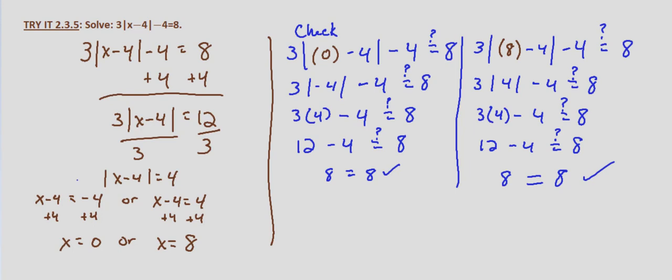So our two solutions to 3 times the absolute value of x minus 4, minus 4, equals 8, are x equals 0 or x equals 8.